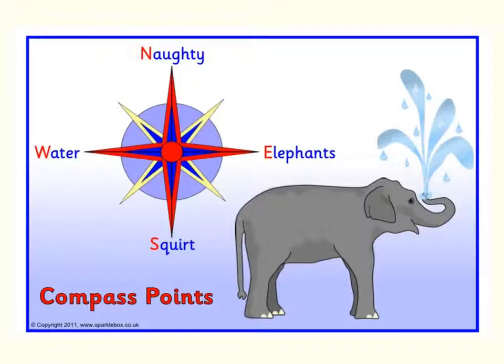This one says naughty elephants squirt water. Do you like that one? Or do you like my never eat soggy Weet-Bix? How about you have a go at trying to think of your own acronym to remember which order north, east, south and west goes in. So it must go around like a clock. From the top of the clock, around to the right, down to the bottom and then around to the left.